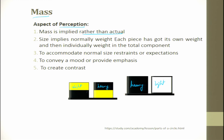Mass is implied rather than actual. By using color, an object may look heavy or light. The size implies normal weight — each piece has its own weight within the total component. Mass conveys a mood, positive emphasis, or contrast in the design.